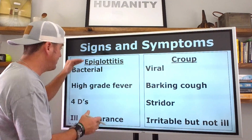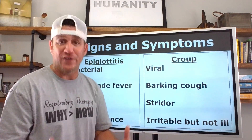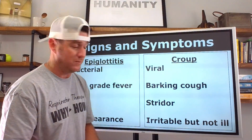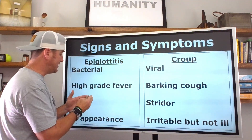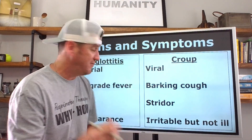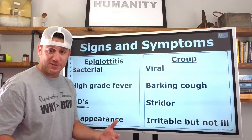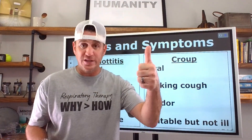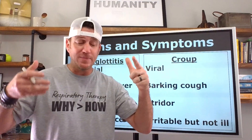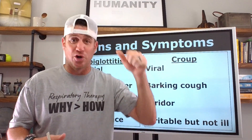Let's talk about the key differentiating factors, starting with epiglottitis. Epiglottitis can be bacterial, viral, or fungal — it's not always bacterial, but it is commonly bacterial. These patients usually present with a high-grade fever, typically with a sudden onset. Now, I want you to remember the four D's. The first is dysphonia — altered speech. The second is dysphagia — difficulty swallowing.